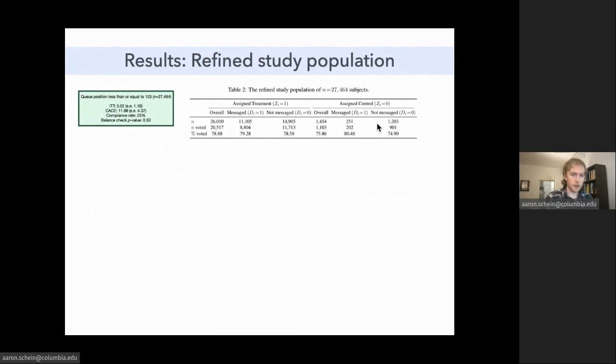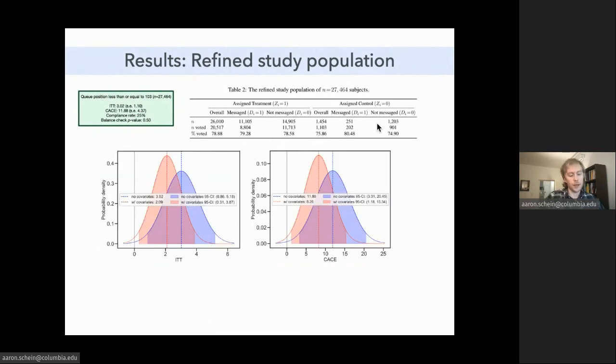In this study population, the IV estimator is about 11 percentage points. You can also add covariates that are available in the TargetSmart database, demographic variables, like race, age, gender, and so on. And if you adjust the estimator using covariates, you get a CACE of around eight percentage points, eight percentage points and significantly non-null.